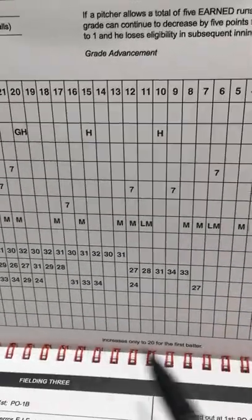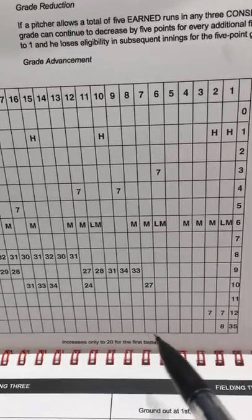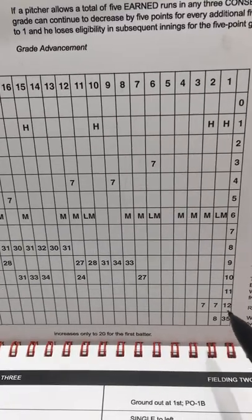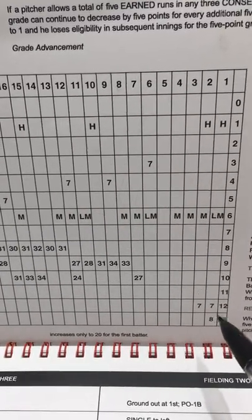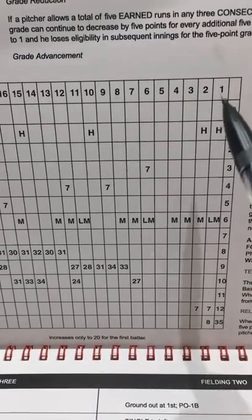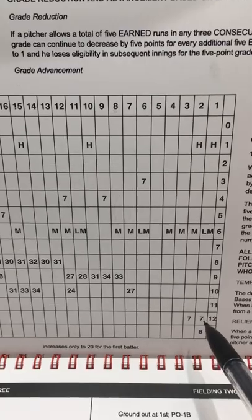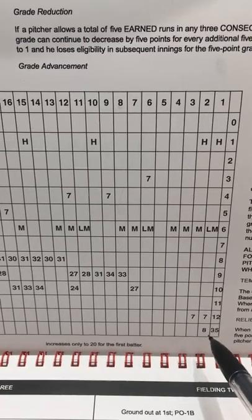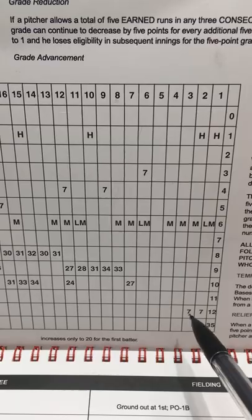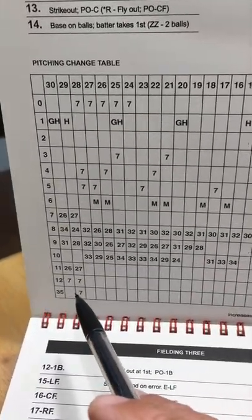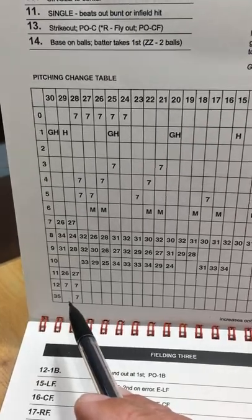One other nice feature of the pitching change table in the Apto master game: if you roll a 12 or 35 play result and you have a really bad pitcher — say he's a grade 1 or 2, remember grade 1 is the worst possible pitcher — he can give up a hit on play result 12 or 35. Grade 12 actually gives up 2 hits on a grade 1 and 2. And even the higher grades can get hits on a 12 and 35 as well.